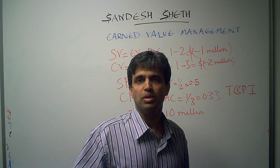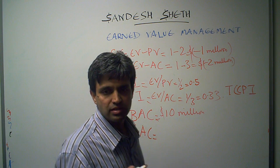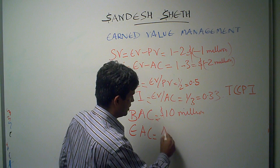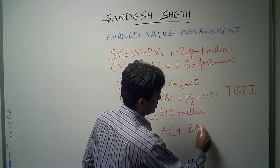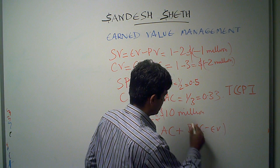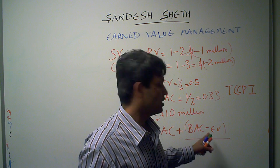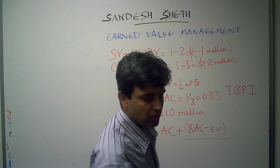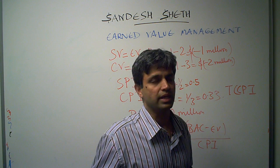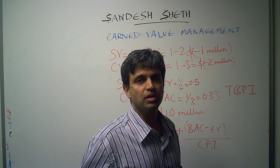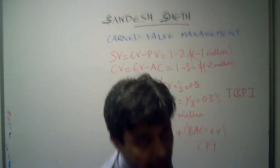The formula normally available in books and online is: EAC equals actual cost plus budget at completion minus earned value, divided by the cost performance index. This is a very simple formula and you can look at it directly.